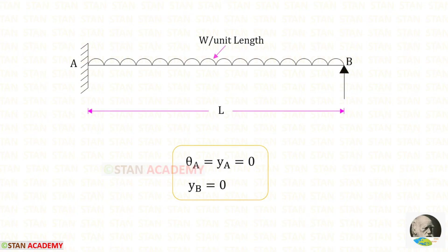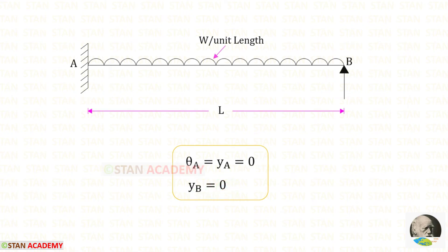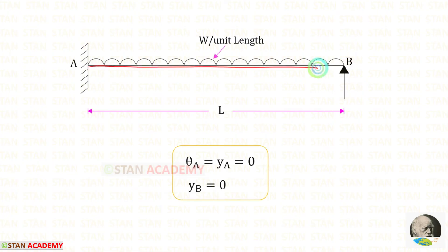Now we are going to find the slope and deflection values. At point A there is a fixed support, so both slope and deflection at A are zero. Since there is a vertical support at point B, the deflection at B is also zero. To find the slope at the propped end and the maximum deflection, we are going to use Macaulay's method. Since there is UDL for the full span, only one section is needed.